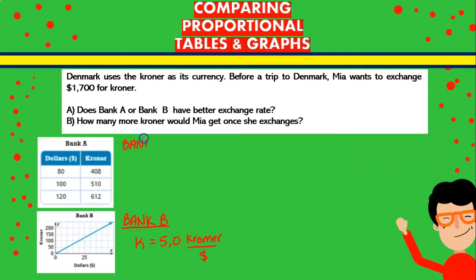If you recall, Bank A was giving us 5.1 kroner by each dollar. That means that Bank A gives us a little bit more money, which is what in this case Mia wants because it has a better exchange rate. So it's better for us. In this case, Bank A would be the answer to the first statement.